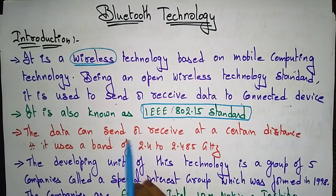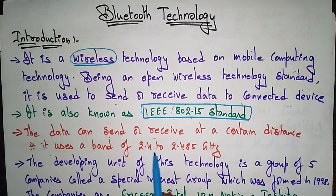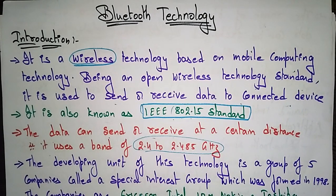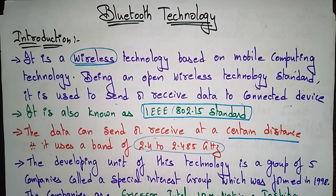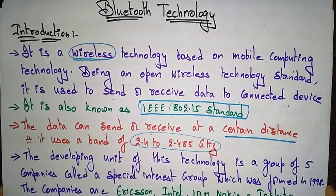Data can be sent or received at a certain distance. Bluetooth uses a frequency band of 2.42 to 2.485 GHz. Bluetooth can send or receive data only to a certain distance — it is not supported for long distances.